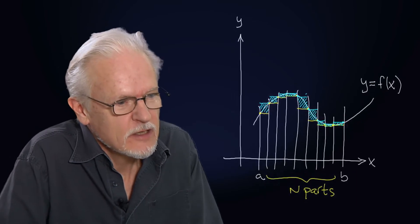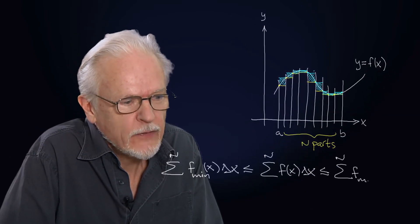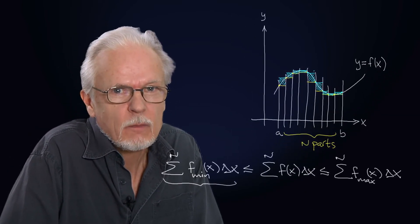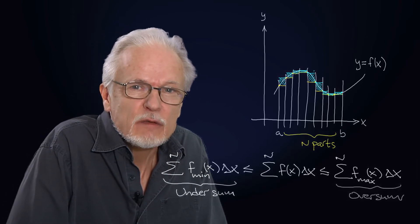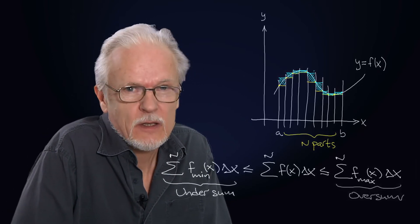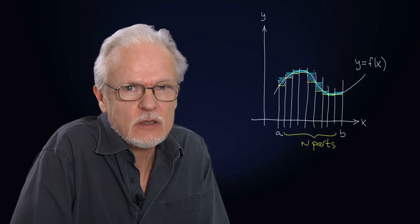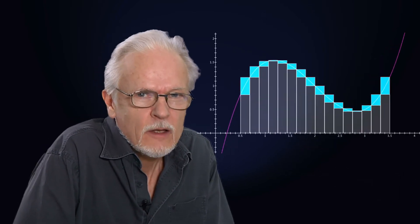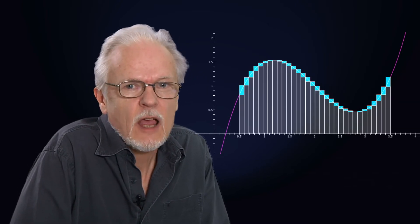we can look at what is called an undersum and an oversum. Basically we are dividing the interval of integration, as we see here, into a number of subintervals, and then we are looking for the smallest number that the function takes inside the interval,